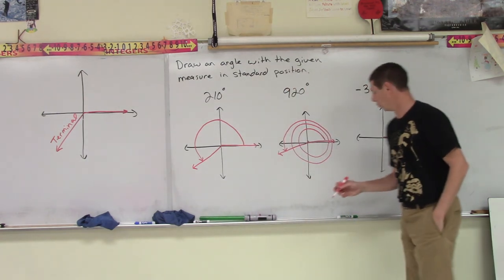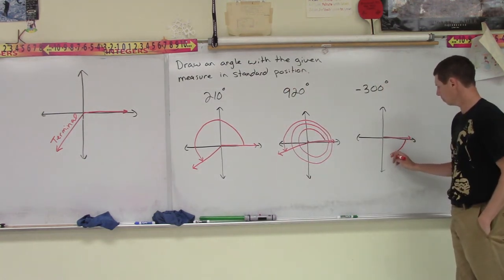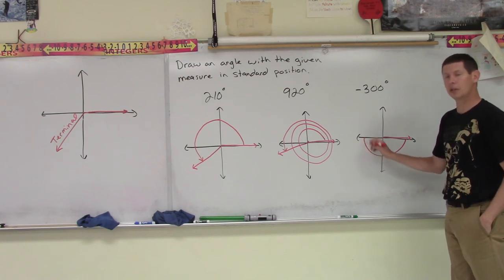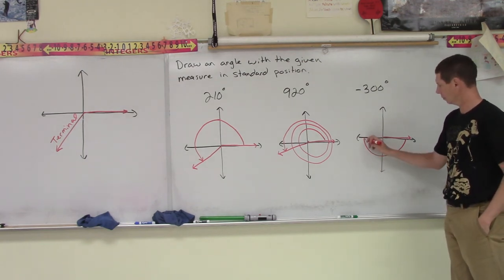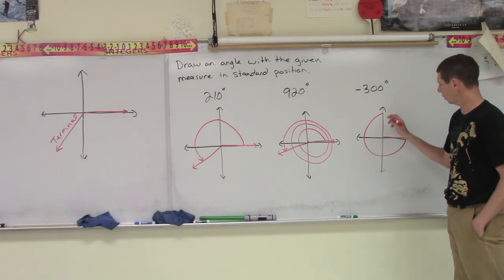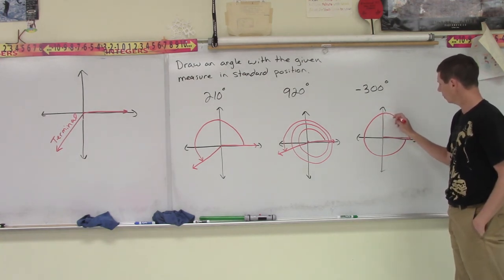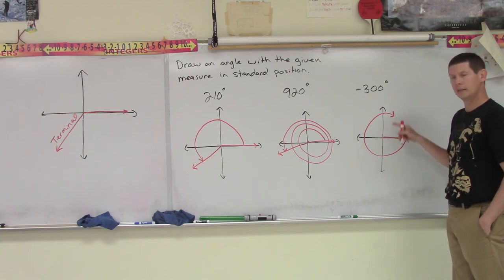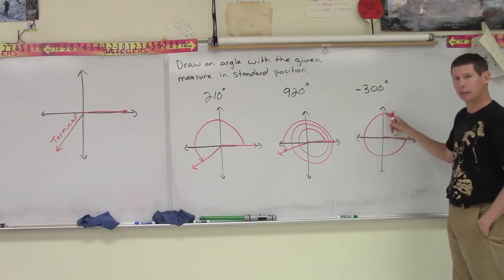So if I come over here, there's my 180. There's my 270, so I have 30 more degrees to go. There you go. That's where I will stop. That would be spinning the 300 degrees.